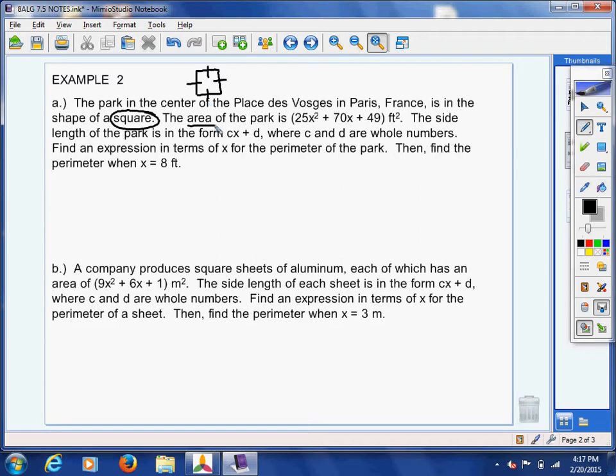Now, the area of the park, now they gave you the area. Here's the area. Squiggle that. 25x squared plus 70x plus 49, and that's the area of the park.